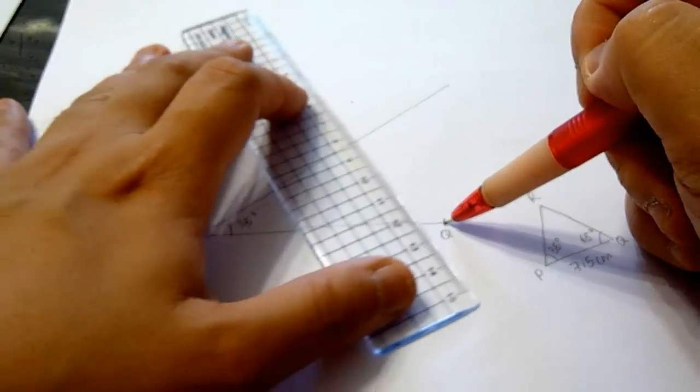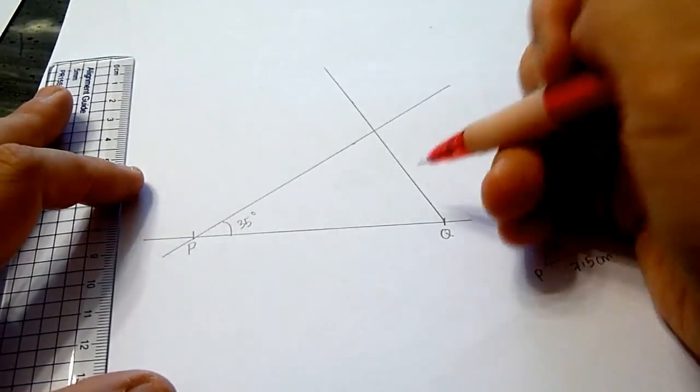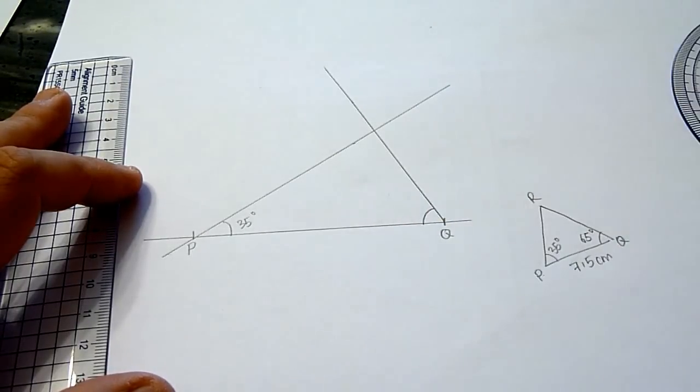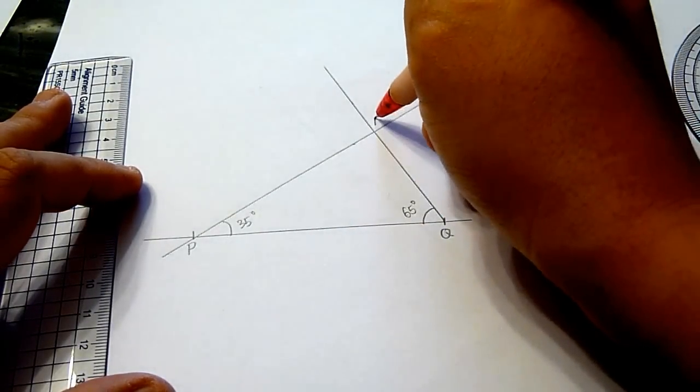Then, we join the dot to point Q, which measures 65 degrees, and this will be point R.